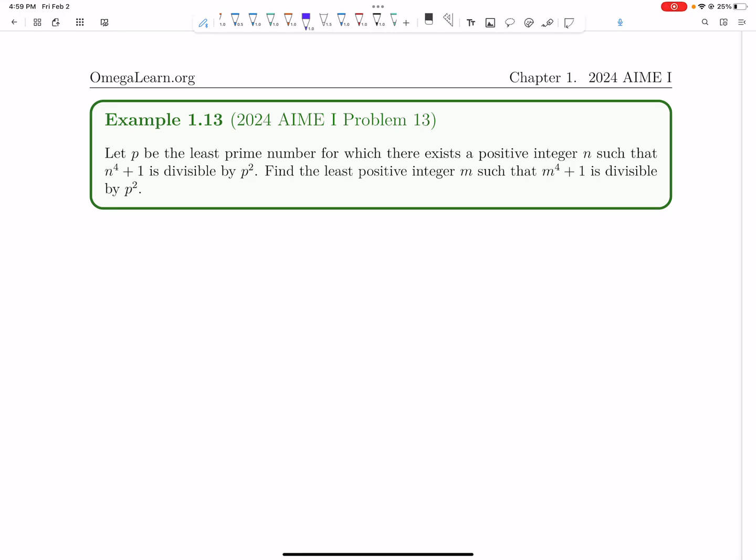Let's now explore how to solve number 13 on the 2024 AME. Let p be the least prime for which there exists a positive integer n such that n to the 4 plus 1 is divisible by p squared.